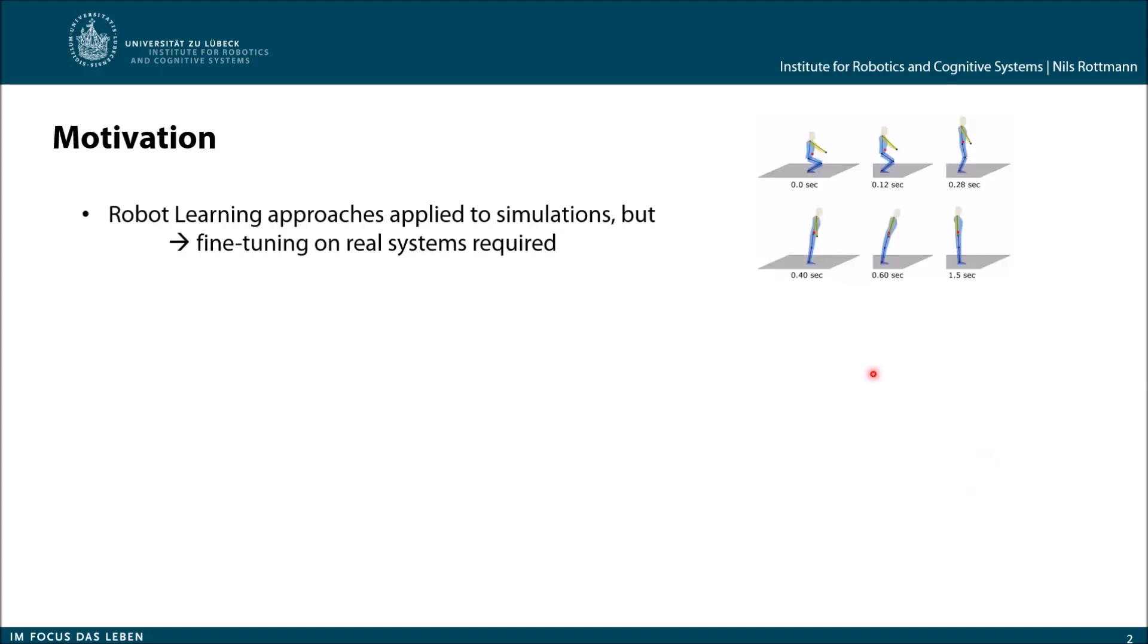Just imagine you have some robot, for example a humanoid, who wants to learn some complicated control tasks. For example here, as we use throughout the section, a postural control balancing task. So the robot should start here in this squat position and tries to stand up without falling down. And what we do with learning approaches is, we apply them in general first to some simulations and then go onto a real system. But on the real system, we need in general then some fine-tuning. And this fine-tuning is kind of crucial.